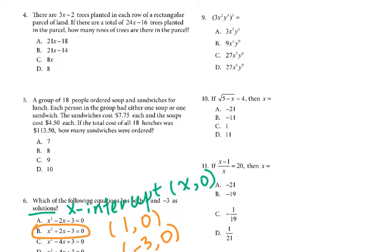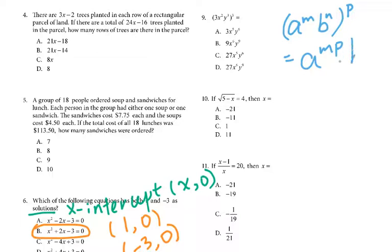For number 9, this is about the power of a power rule: (a^m times b^n)^p equals a^(mp) times b^(np). Applying this, the expression gives 3 to the third power, x to the sixth power, and y to the ninth power. Your answer is D.